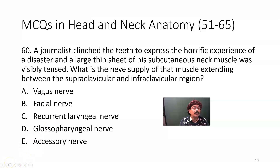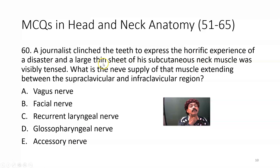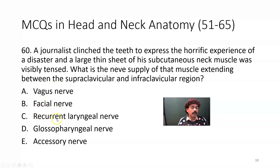A journalist clenched his teeth to express a horrific experience of a disaster, and a large thin sheet of subcutaneous neck muscle was visibly tensed. What is the nerve supply of that muscle extending between the supraclavicular and infraclavicular region? Options: vagus nerve, facial nerve, recurrent laryngeal nerve, glossopharyngeal nerve, accessory nerve. The answer is the facial nerve — he is showing the muscle of facial expression, the platysma muscle, innervated by the cervical branch of the facial nerve.